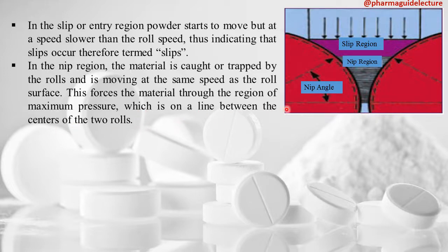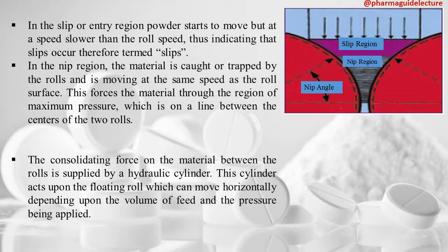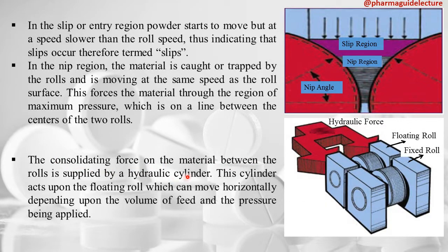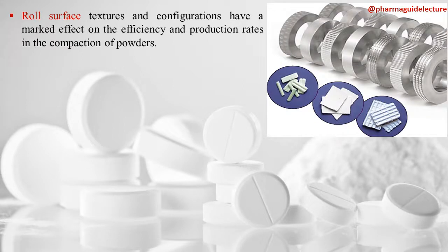The maximum pressure region is on the line between the centers of the two rolls. When the powder passes through this region, it is converted into solid compacts. The consolidating force is supplied by hydraulic pressure on the floating roll, which can move horizontally depending on feed volume and pressure. Roll surface texture and configuration markedly affect compaction efficiency and production rates.